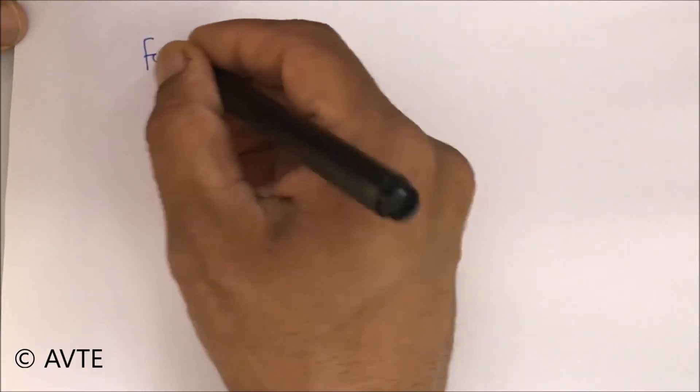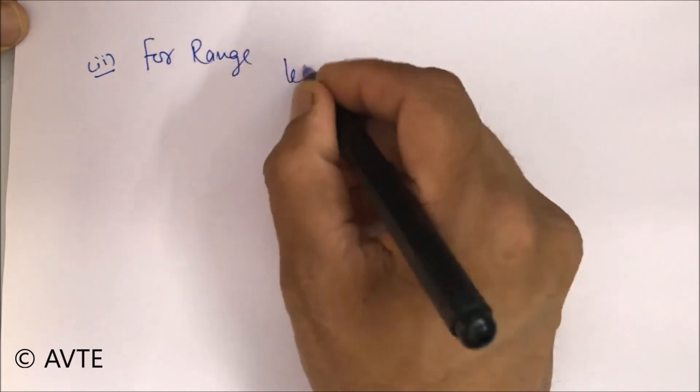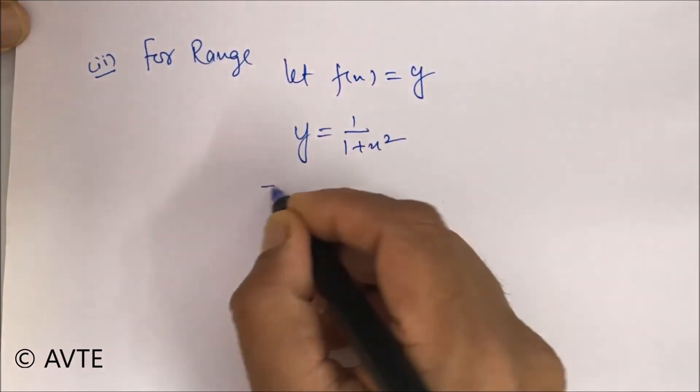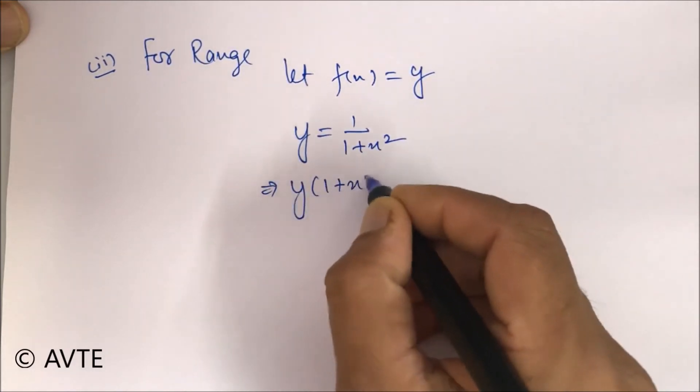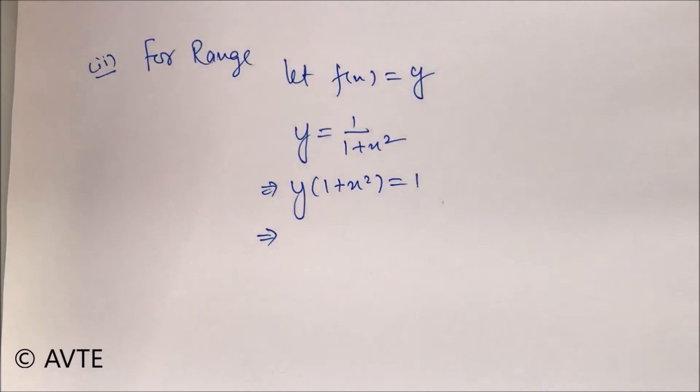Now coming on to the range. For range, we have to convert dependent to independent. We cross multiply and now the target will be to get x in terms of y. That is, we'll convert x to be the dependent variable and y will be the independent variable.